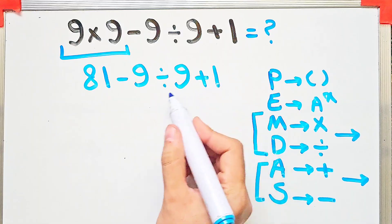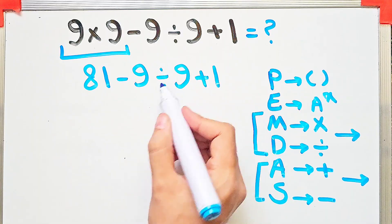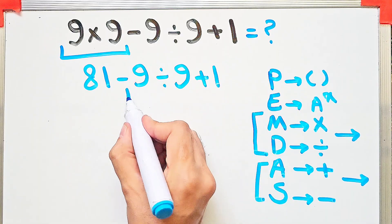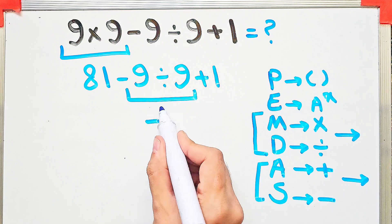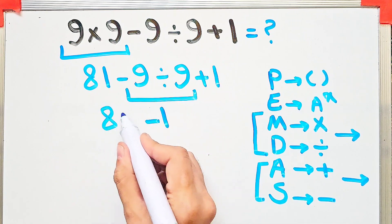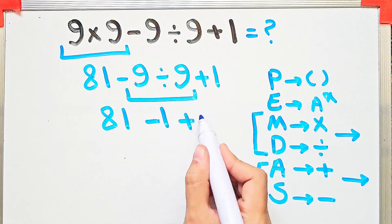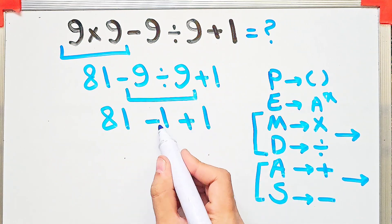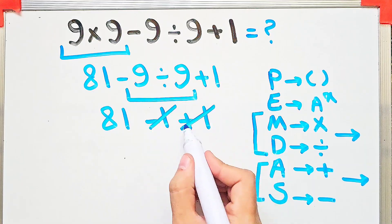Now we do the division: 9 divided by 9 equals 1. We have 81 minus 1 then plus 1. The final answer of this question equals 81.